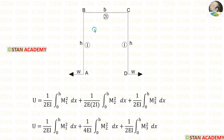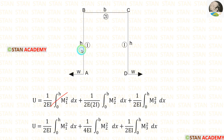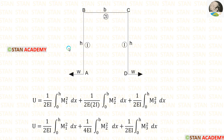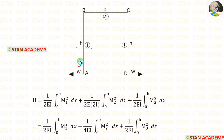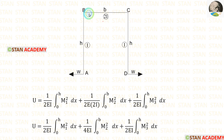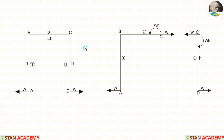In this frame, we have three different parts: AB, BC, and CD. So we have to split the strain energy formula into three parts. We need to make three sections — one for AB, one for BC, and one for CD. The limits for AB will be 0 to H, for BC will be 0 to B, and for CD will be 0 to H. For BC, the moment of inertia is 2I, so instead of I we apply 2I, giving us 2 into 2 equals 4.